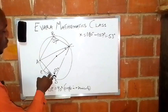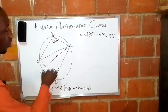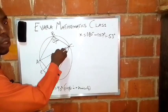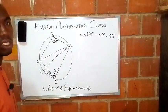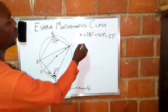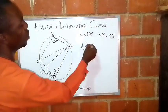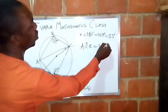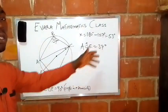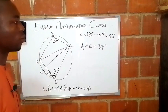And remember we are trying to get this angle. So if you look at this angle 37 degrees and this angle that we are looking for, they are angles in the same segment. So that means angle ACE is equal to what? 37 degrees. Because angles in the same segment are what? Equal.